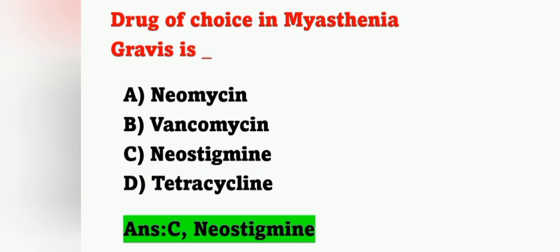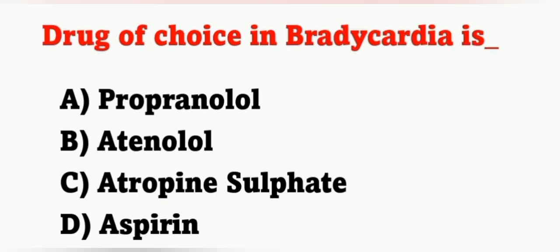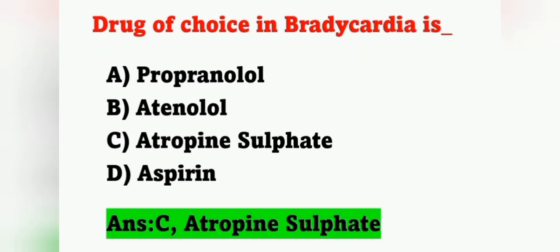Next question: drug of choice in bradycardia is — option A: propranolol, option B: atenolol, option C: atropine sulfate, option D: aspirin. Drug of choice in bradycardia is atropine sulfate, option C is correct. Bradycardia means decreased heart rate — heart rate going below 60 is known as bradycardia.